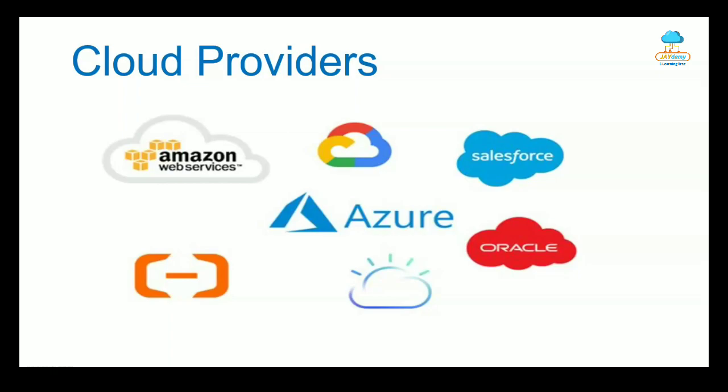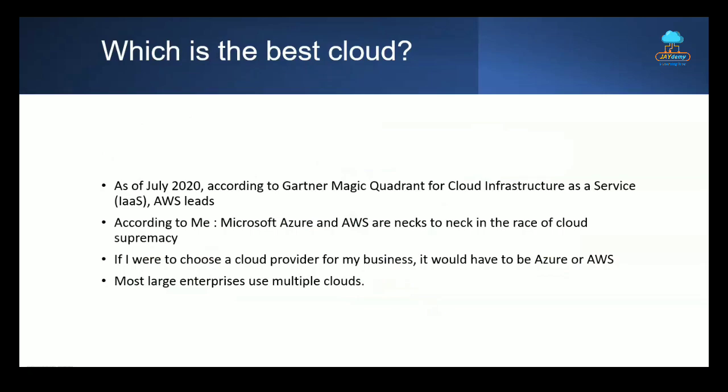The leading cloud service providers in the world are Amazon Web Services, Google Cloud, Microsoft Azure, Alibaba Cloud, IBM Cloud, Oracle OCI, and Salesforce. According to the Gartner Magic Quadrant for Cloud Infrastructure as a Service as of July 2020, AWS is the leader in ability to execute, Microsoft Azure leads as a visionary, Google is third, followed by Oracle, Alibaba, and IBM. Microsoft Azure and AWS are neck to neck in the race.